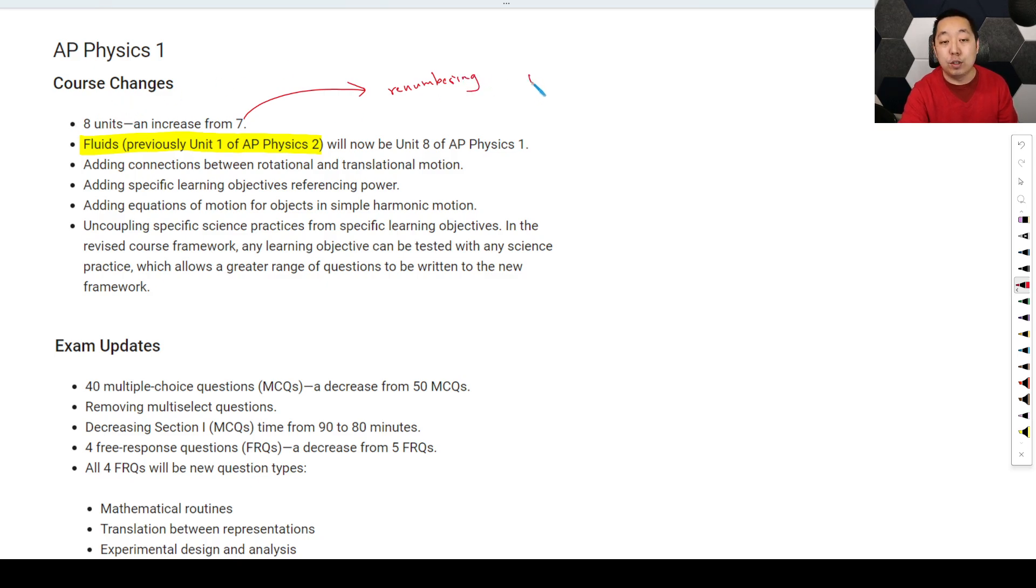They're getting rid of Unit 3. Unit 2 and 3 are being combined for forces. So Unit 3 was circular motion and gravity. It's being combined into here. And then Rotation is being split into two units. So it is correct the number of units, but there are some changes in that structure. And this makes sense.